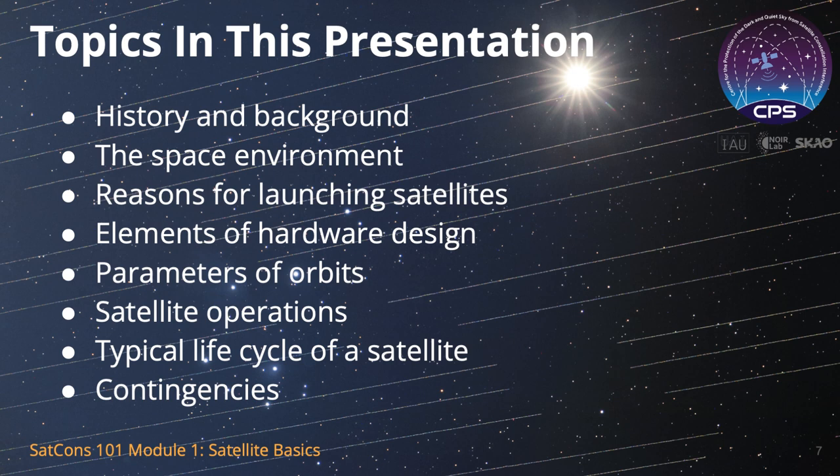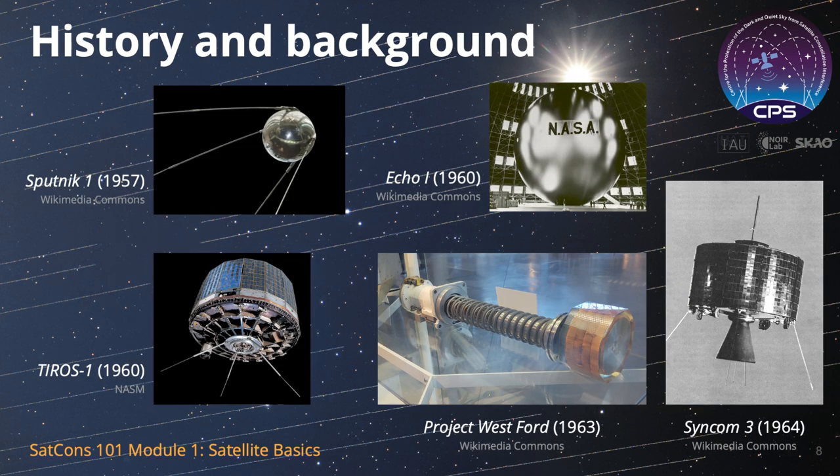Today, we will focus on the topic of Satellite Basics. In the next few minutes, I will discuss each of the following elements that relate to the topic of this video. The Soviet Union launched the first artificial satellite into space in 1957. The earliest period in the history of spaceflight in the late 1950s consisted of tests of satellite technology. Uses of satellites then spread into the realm of communications with the launch of the ECHO-1 satellite in 1960. In the same year, applications of satellite technology branched into Earth observation.